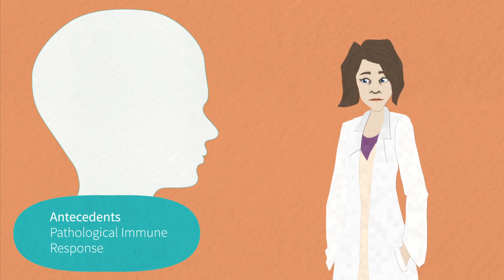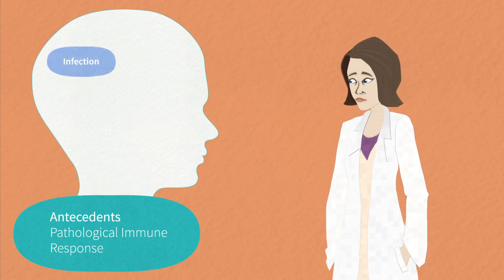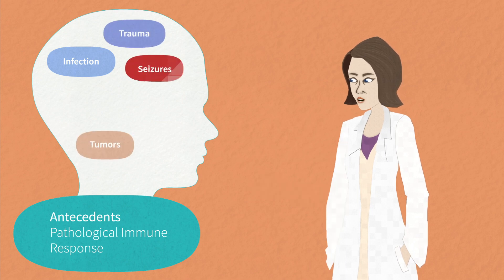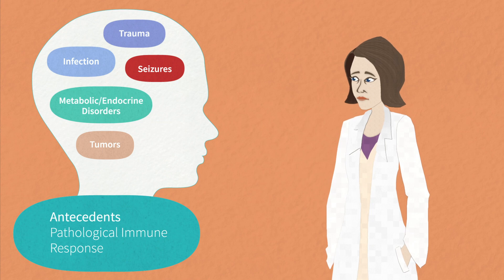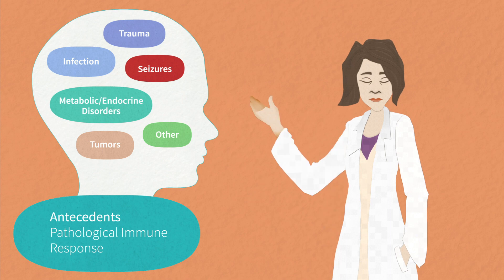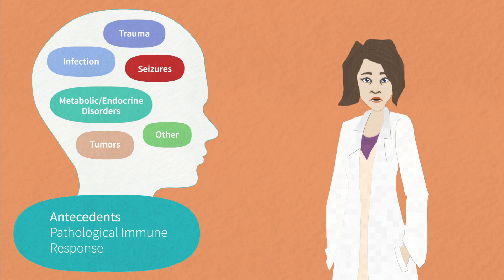Antecedents for pathological immune responses may be infection, trauma, tumors, seizures, metabolic or endocrine disturbances, or otherwise, antecedents may remain unidentified. All of these possibilities should be considered with any change in psychiatric or mental status.